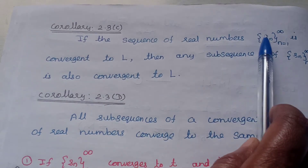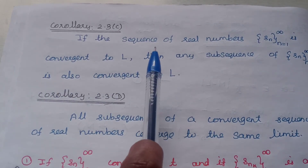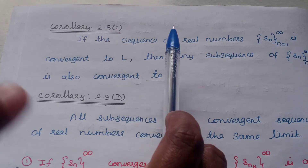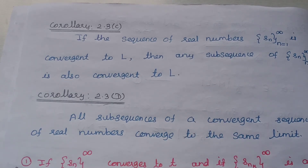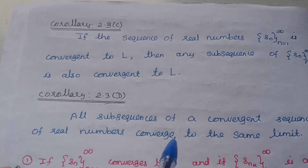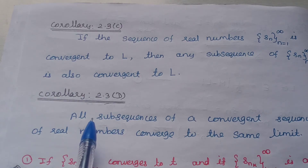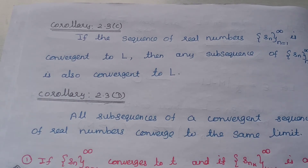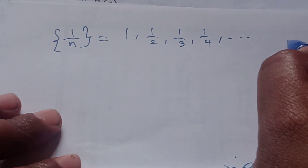Let's look at the corollary: if a sequence of real numbers is convergent to L, then any subsequence is also convergent to L. Since a sequence cannot converge to more than one limit, any subsequence of a convergent sequence must also converge to the same limit. Whatever the original sequence converges to, every subsequence converges to that same value.